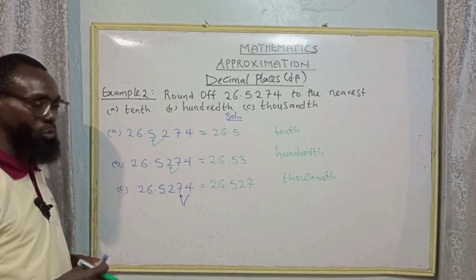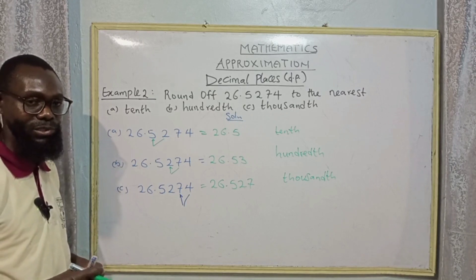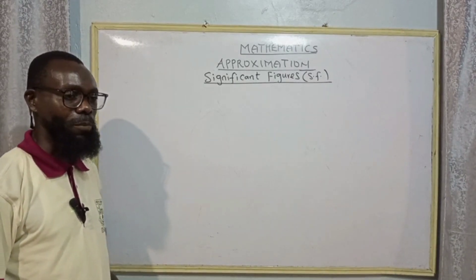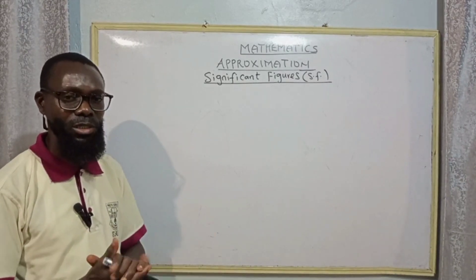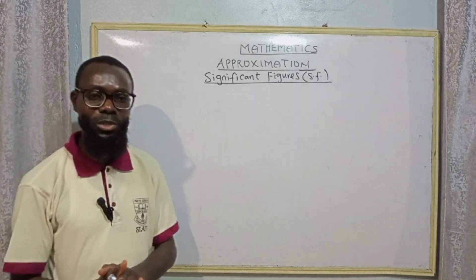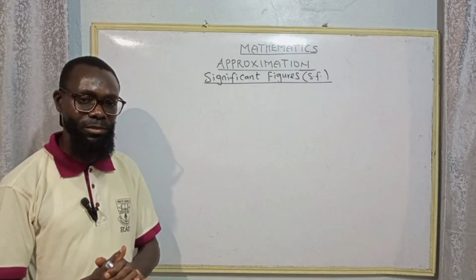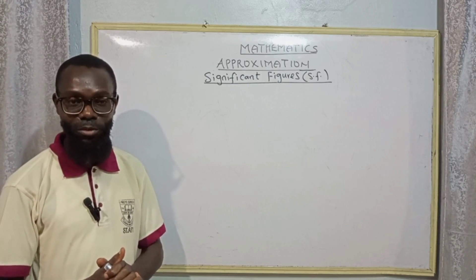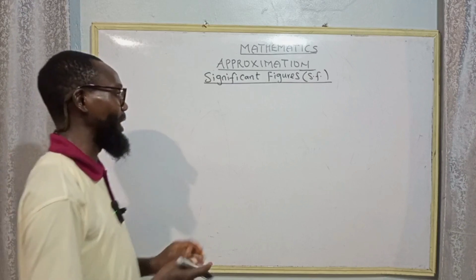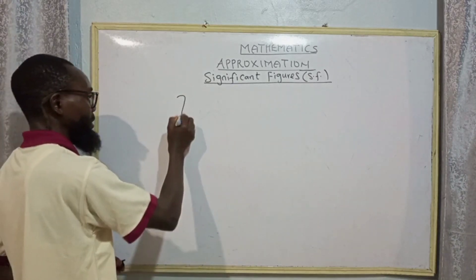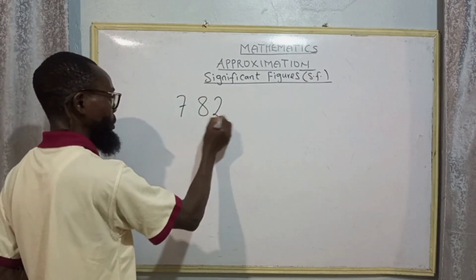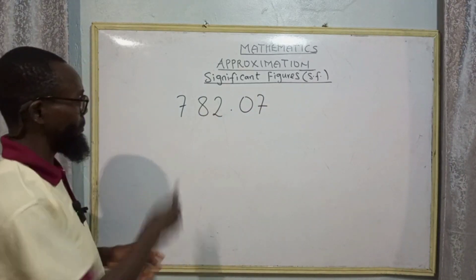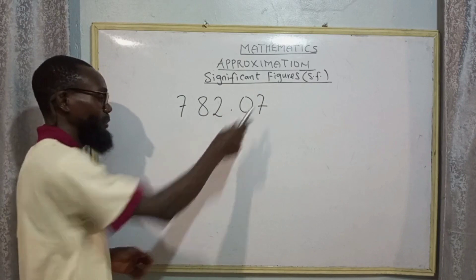Now let us move on to significant figures (SF). When talking about significant figures, we are talking about non-zero digits that start a set of digits. For instance, if we have 782.07, we count one, two, three, four, five — we have five digits total.